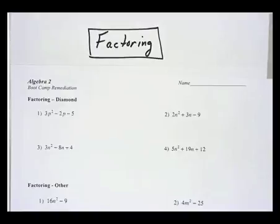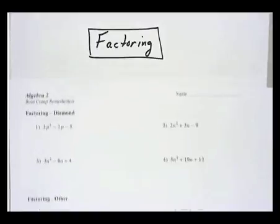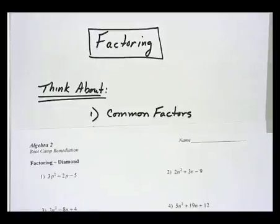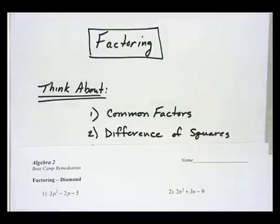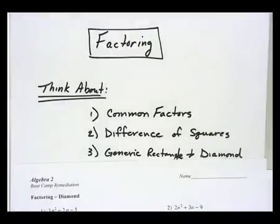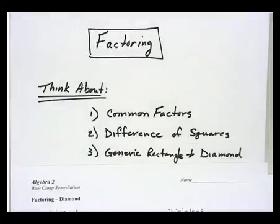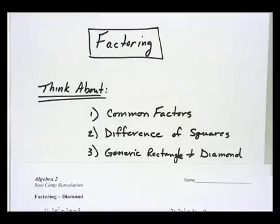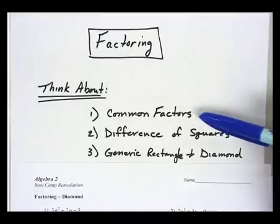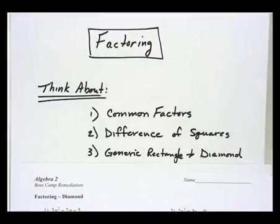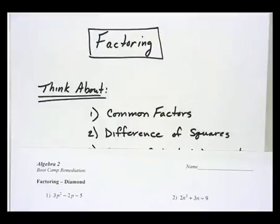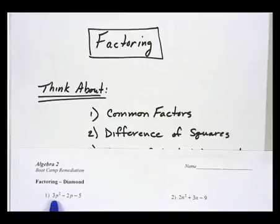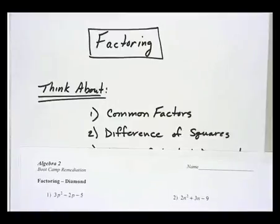There are three things that you should ask yourself when you're beginning to factor. First of all, do you have common factors? The second thing you should look at is do you have a difference of squares? And then the third thing is if you don't have either of those first two, then check to see if you have a generic rectangle and diamond problem. When we talk about common factors, we're talking about numbers or factors that divide into all three of the terms. Also for common letters, if there's a common letter in all three terms, take that out as well.